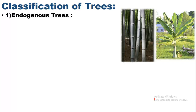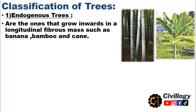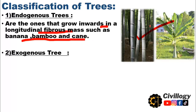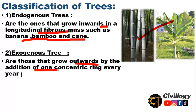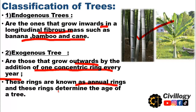Classification of trees is also very important before selecting a material. You must understand which type of tree will fulfill your requirements. The first type is endogenous trees, which grow inwards in a longitudinal fibrous mass — examples include banana, bamboo, and cane. The second type is exogenous trees, which grow outwards by the addition of one concentric ring every year, known as annual rings, which also determine the age of the tree.